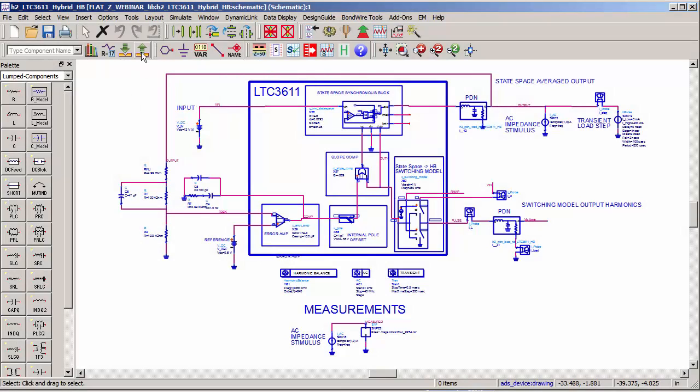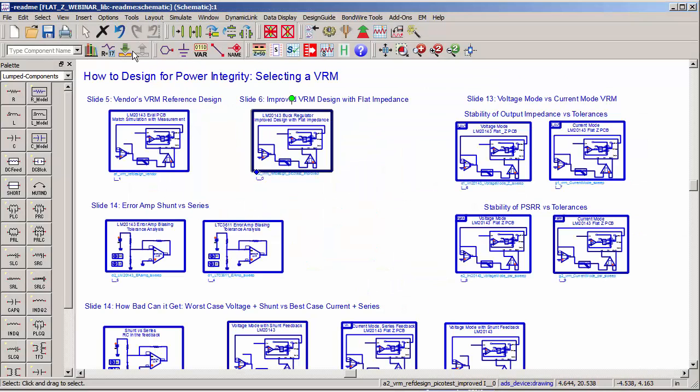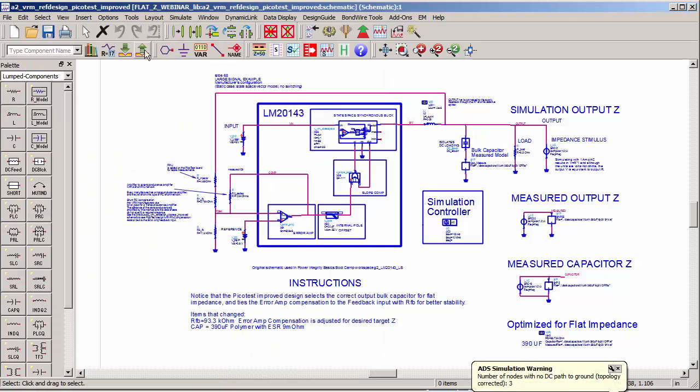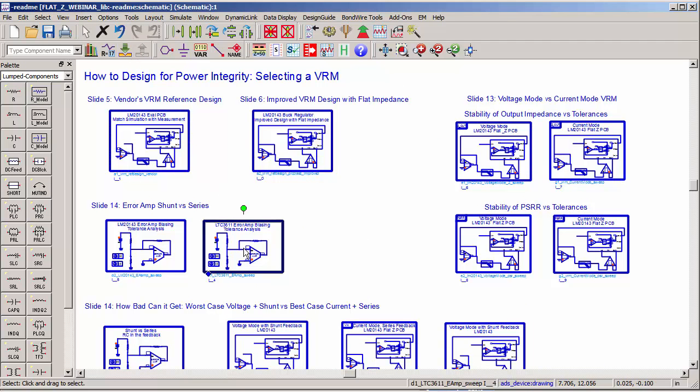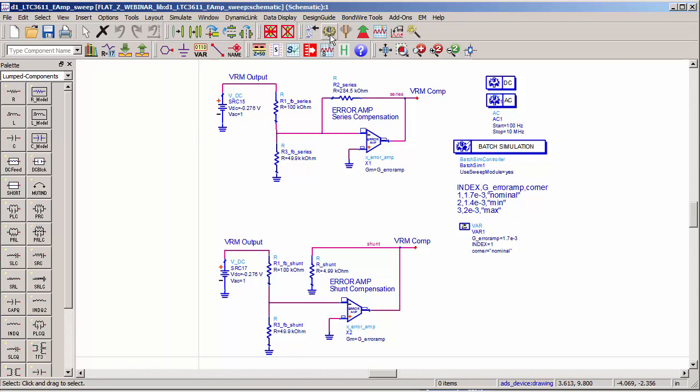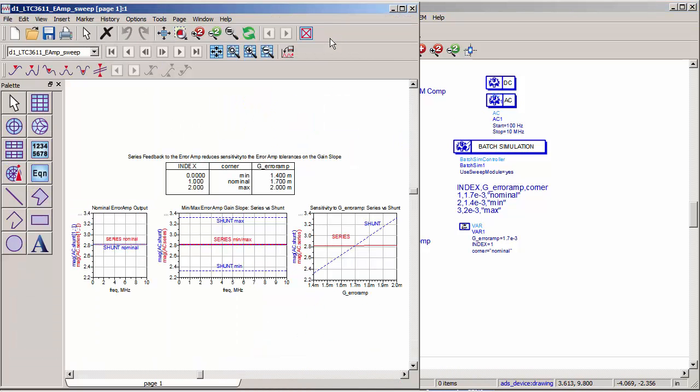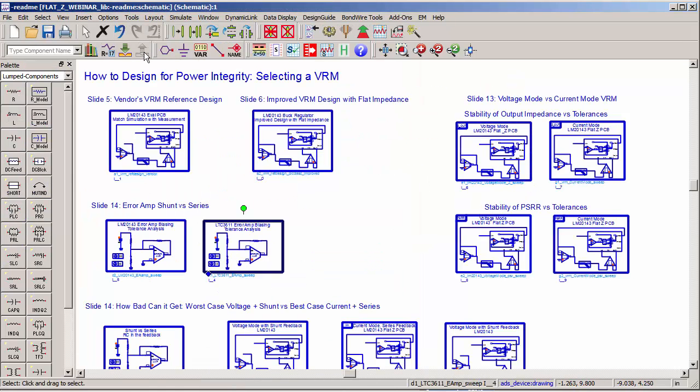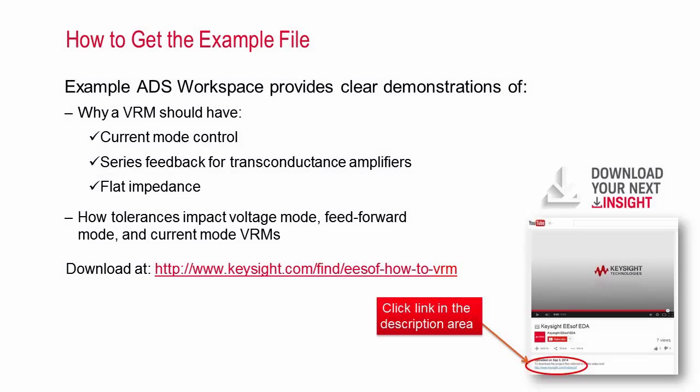In this video, I used measurement-based simulation to show that current mode topology is the best choice for a flat impedance VRM, and also that series feedback is generally preferable to shunt feedback for the transconductance feedback amplifier. I've also shown that nominal measurements don't tell the whole story. Simulation can be used to show the sensitivities of the design topology, as well as individual component sensitivities. If you'd like to explore these power integrity examples, you can download the ADS workspace I used by clicking on the link in the text description associated with this video, or by typing in the URL shown on this slide.